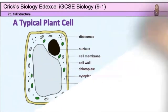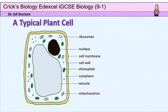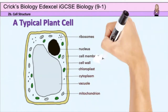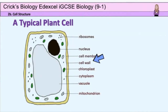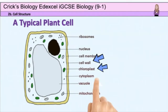So far I have introduced you to structures that are found in both plant and animal cells. Plant cells however have additional structures and you also need to know the roles of these. These are the cell wall, the chloroplasts, and the vacuole.